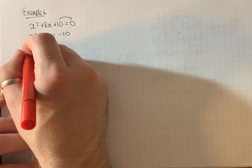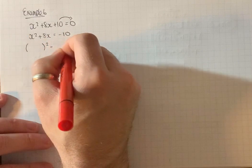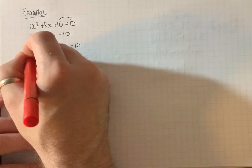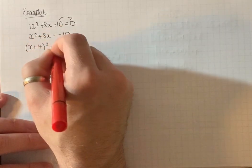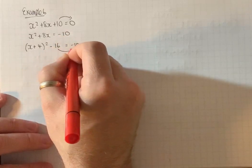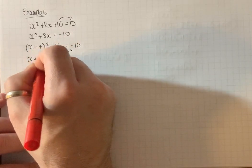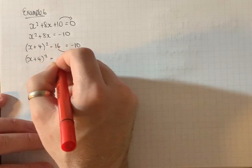Now complete the square here. It's going to be bracket x plus, squared, minus. Halve this 8, square that's 16. Wallop that over to the other side. We get x plus 4 squared equals 6.